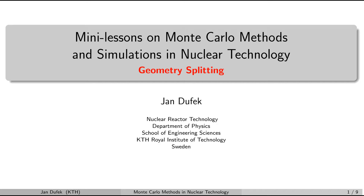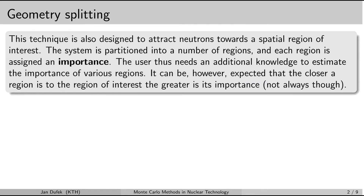Welcome back. In this lesson we are going to learn about another variance reduction technique called geometry splitting. Geometry splitting is a pretty common variance reduction technique which can be used to attract neutrons into a specific part of the system. It can improve the efficiency of the simulation in exchange for some information about the system — specifically, information relating to the importance of different parts in the system.